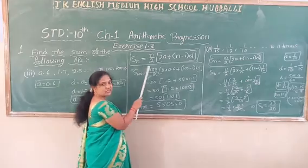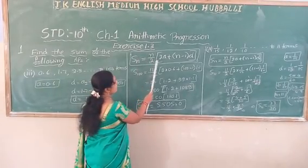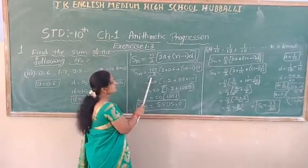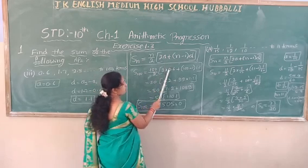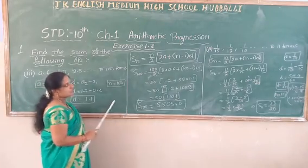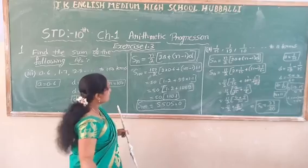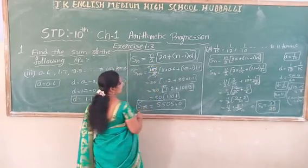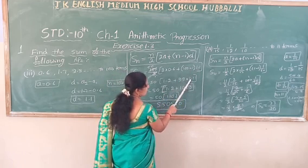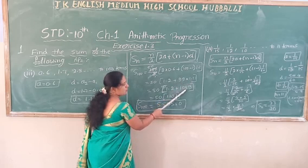We are going to use the same formula for sum of n terms of an AP when we know a, d, and n: S equals n by 2 into 2a plus n minus 1 into d. Substituting: n is 100, divided by 2, a is 0.6, so 2 into 0.6 equals 1.2, plus n minus 1 is 99 into d which is 1.1. 100 divided by 2 is 50. After multiplication of these two terms, it becomes 108.9.